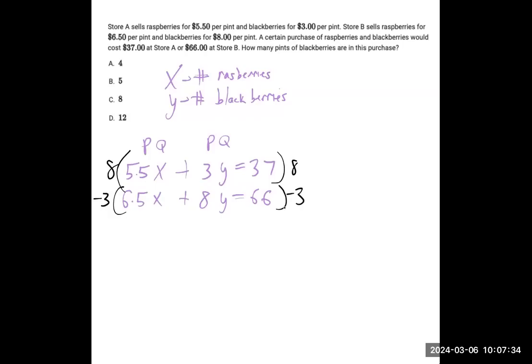We can multiply by 8 and negative 3, because we've got 3 and 8 here. Multiplying by the opposites with one negative sign is going to make that cancel out. Let's work that out.